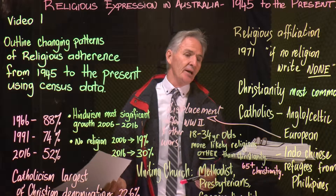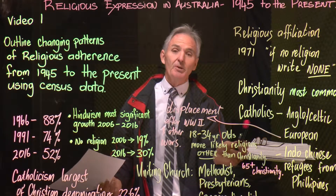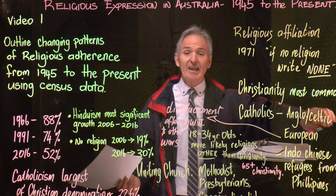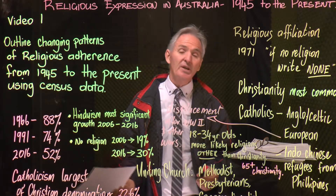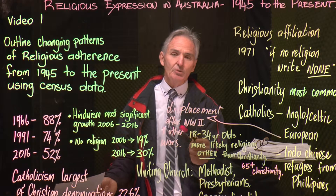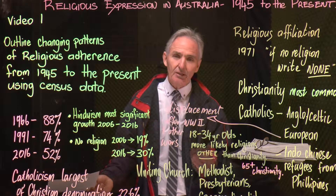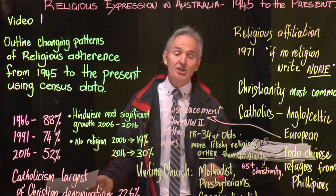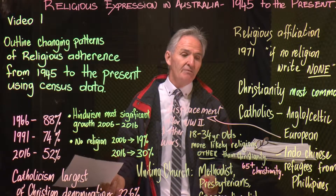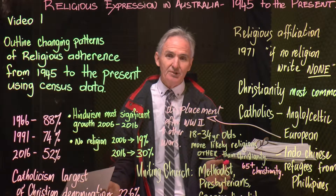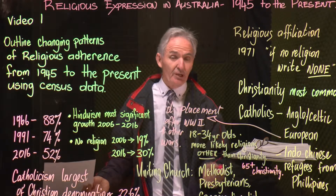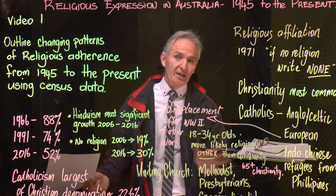Generally Christianity is the most common religion, and within that Catholicism is the most common denomination. Catholics were generally Anglo-Celtic — that is, coming from Great Britain, England, Ireland, Scotland, Wales — up until 1945. But after the war there was a big European influx because of the displacement after World War Two and the bombing throughout Europe. We had Croatians, Serbians, Italians, Germans, and Spanish coming in, many of them Catholic, so the makeup of the Catholic religion changed significantly. We also had many people coming from Orthodox countries — Greece, Russia, and from the old Yugoslavia — so the Orthodox denomination also changed dramatically after World War Two.